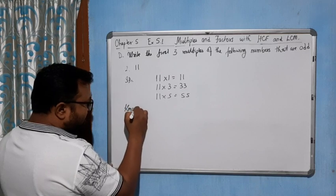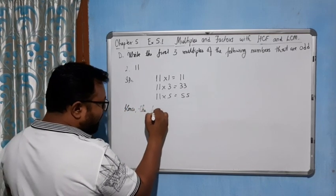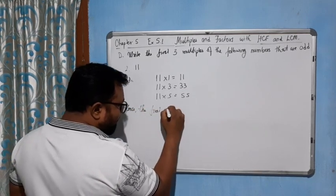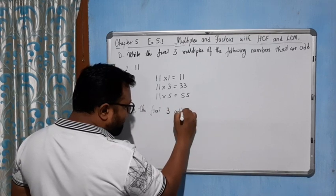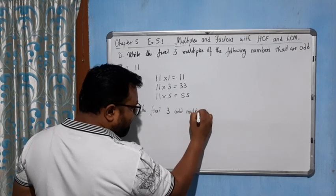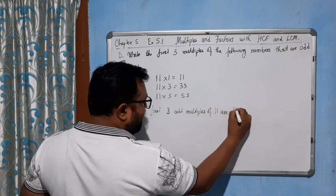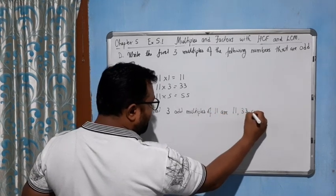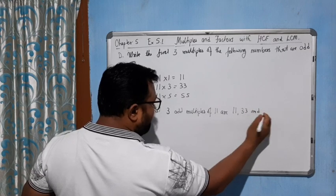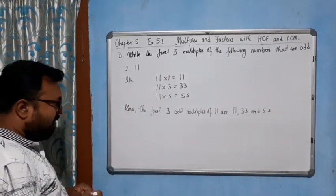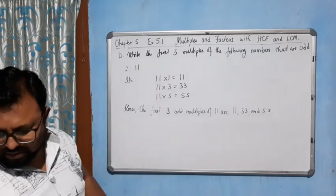Hence, the first three odd multiples of 11 are 11, 33, and 55.